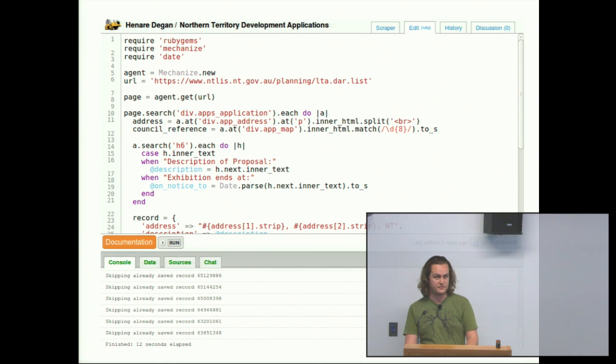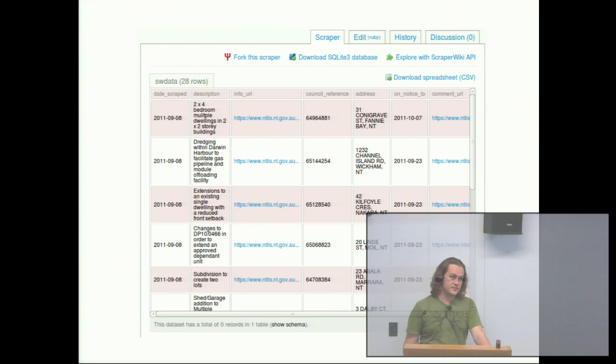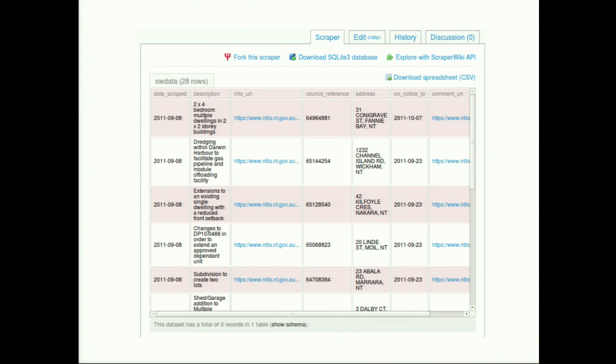Once you've written that scraper and you've run it like I have there, it then allows you to store all the data in the data store and this is what the preview of the data store looks like. As I said before, it's SQLite based, so you can have multiple tables, you can relate that data to each other just like a proper relational database. On that screen you can, as I said before, everyone knows what a CSV is, you just download a CSV. So if I click download spreadsheet, I can then open it up straight away in Excel and start doing some interesting charts and things like that. It also allows you to download the SQLite database directly there so you can use it on your local machine or run a server or whatever if you want to.